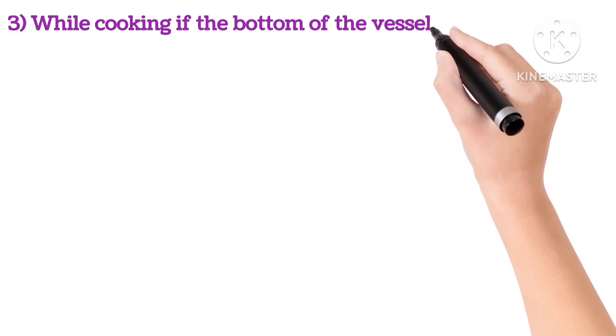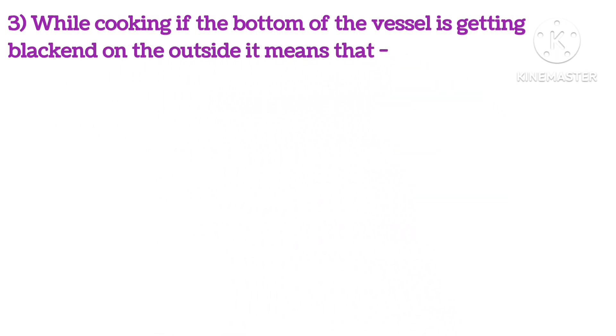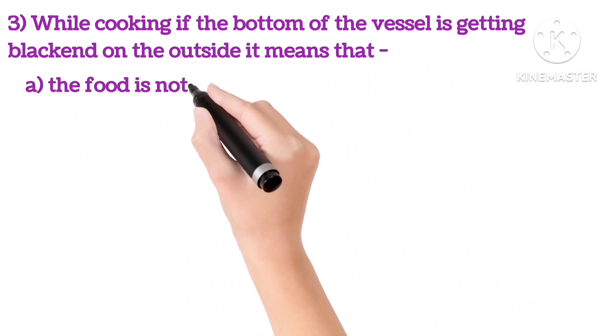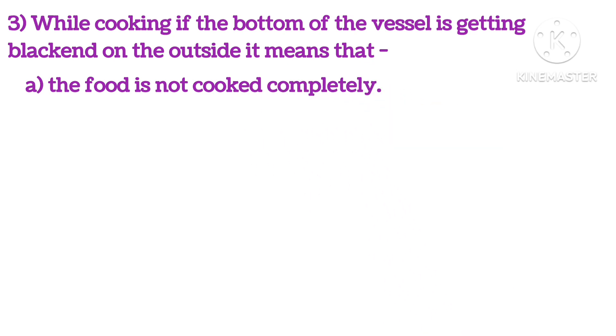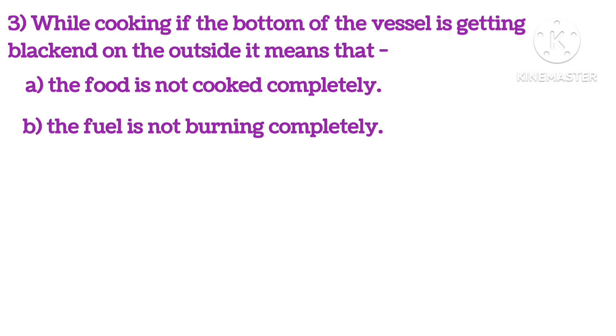Third, while cooking, if the bottom of the vessel is getting blackened on the outside, it means that: A. the food is not cooked completely, B. the fuel is not burning completely, C. the fuel is wet, or D. the fuel is burning completely.